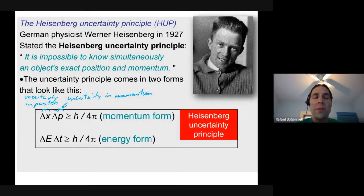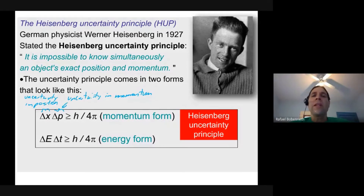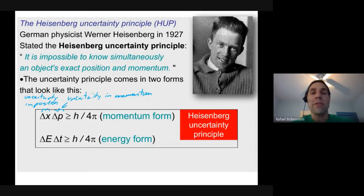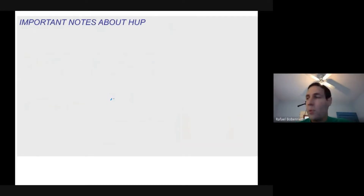By the way, Werner Heisenberg is a really interesting character. I recently finished a book called 'The Bastard Brigade' — it's actually one of the books you could read for the legacy project. He has a very complex role leading up to and during World War II, where he joined Germany's efforts to build an atomic bomb.